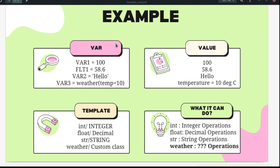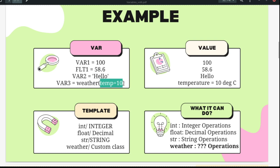That is straightforward. The challenge comes with var3. You see that var3 has something called weather, and inside the brackets it has temp equal to 10. You might assume it is related to weather and that the temperature is 10. But look at the output — it clearly prints as 'temperature equal to 10 degrees Celsius'.